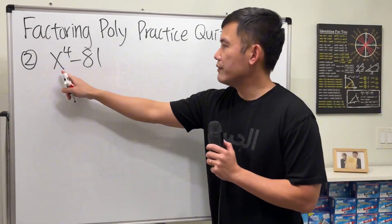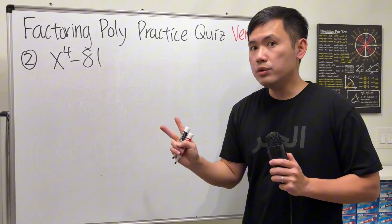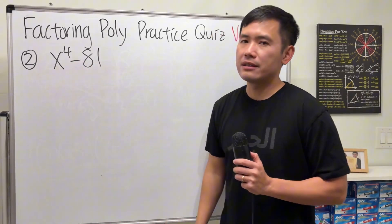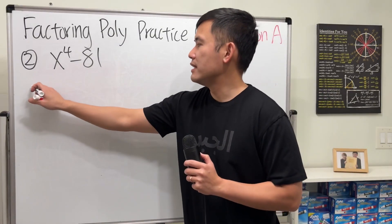Now for number 2, we have x to the fourth power minus 81. So we have two terms, and they don't have common factors. We notice that this is the difference of two squares, when we look at it like this.